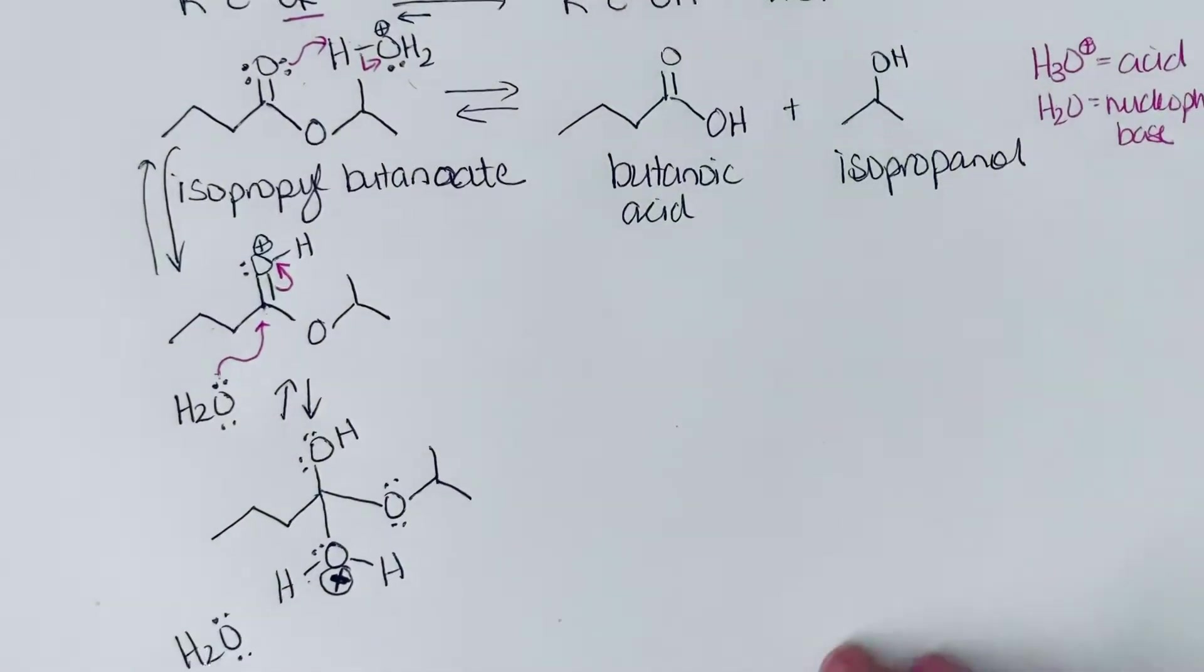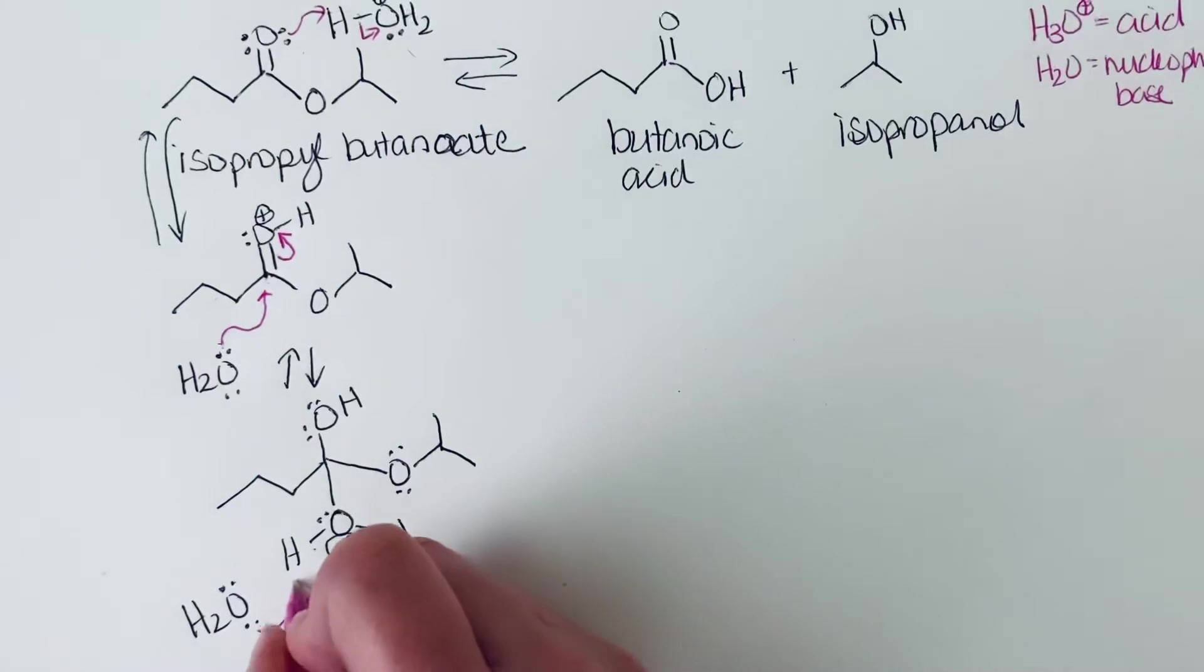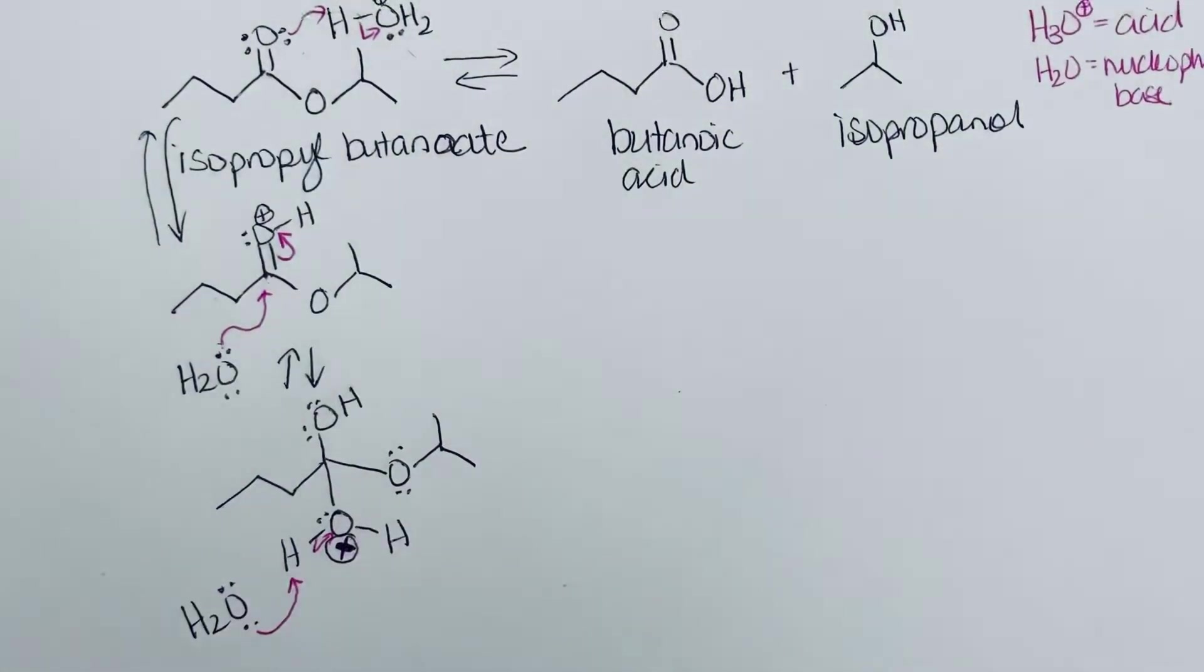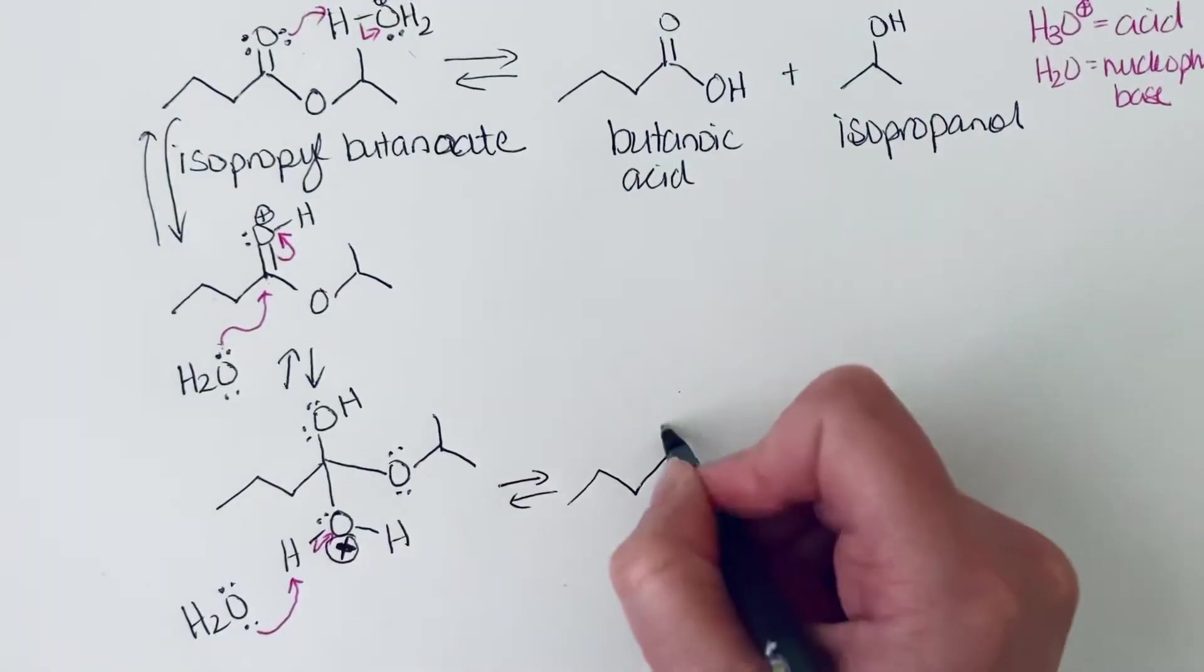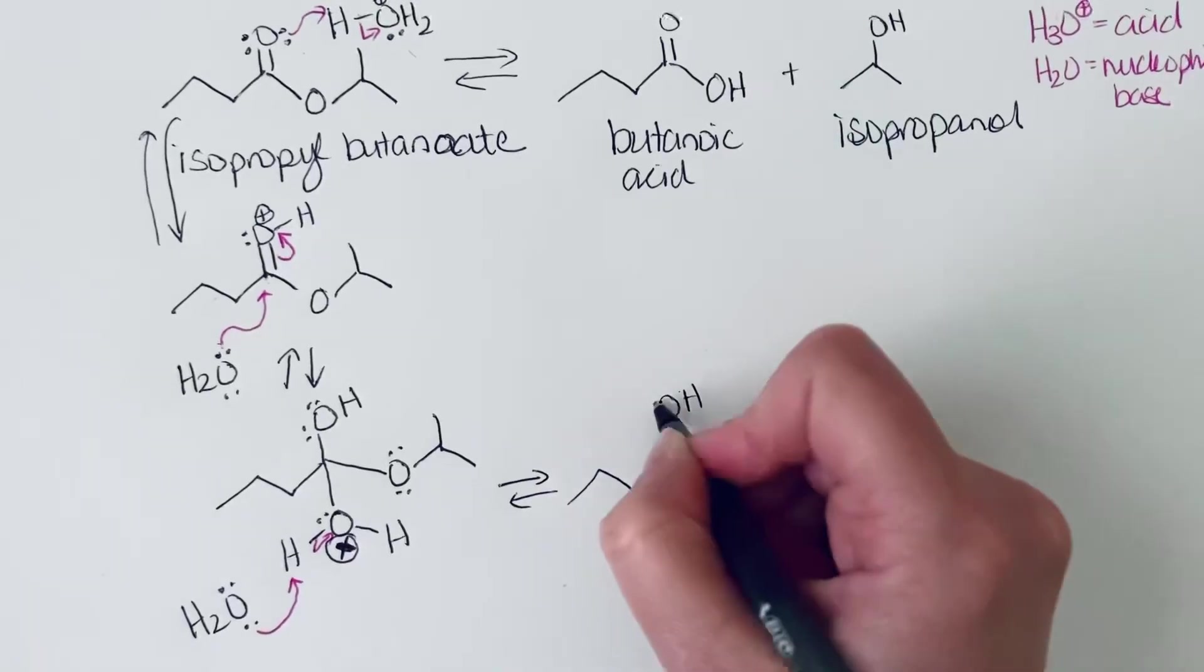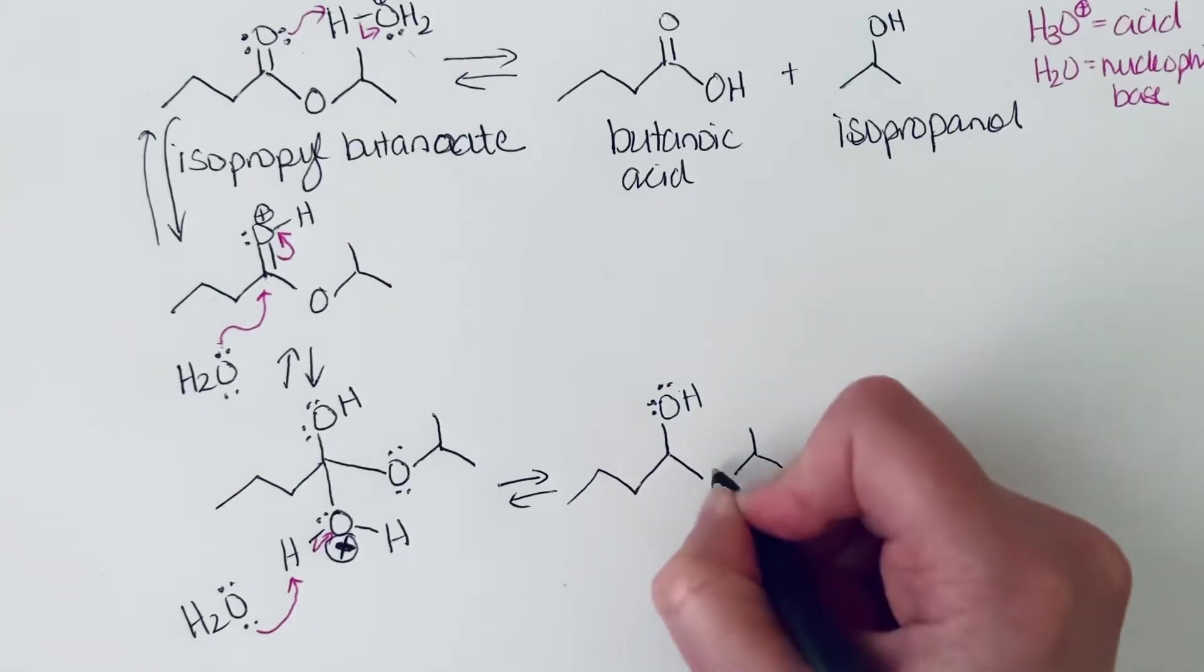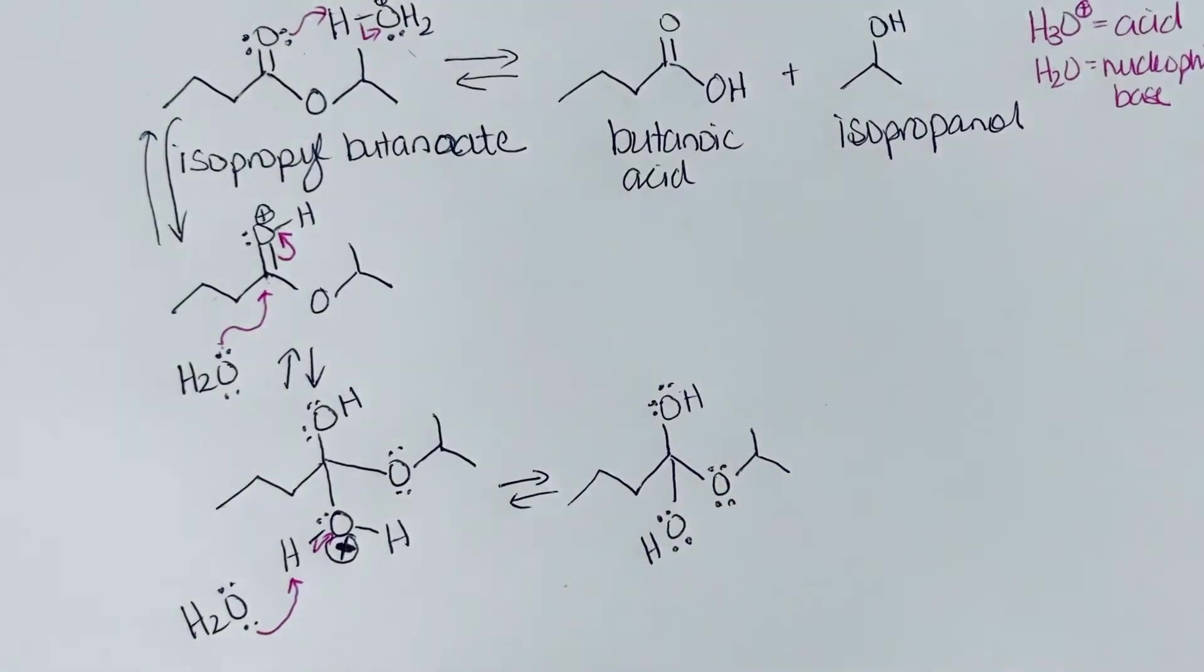So we're going to use water. That is what we have available as a base or a nucleophile. So we're going to use that to take the acidic hydrogen. And so now we are going to have an intermediate that is neutral. Because we have removed that extra proton.